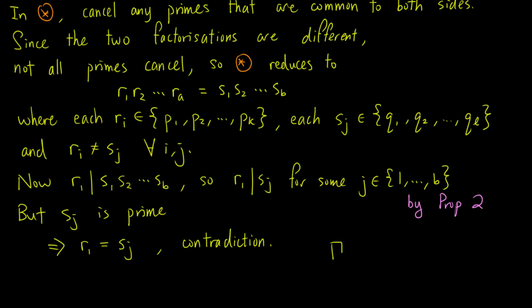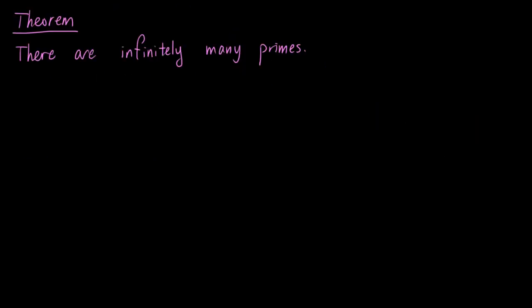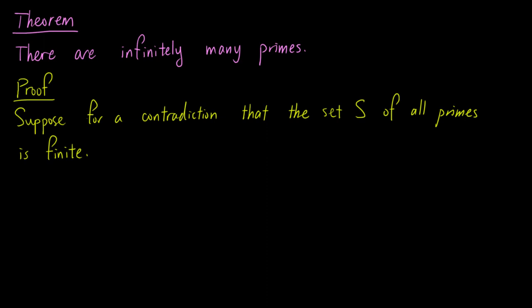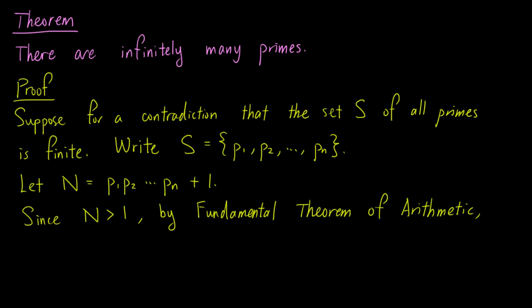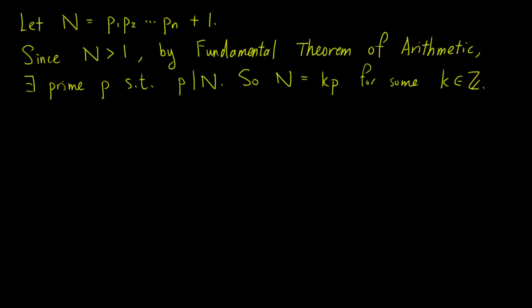This completes the proof. Finally, we prove the result that there are infinitely many primes by applying the fundamental theorem of arithmetic. We proceed by contradiction and assume that the set S of all primes is finite, so we can write S equals {p1, p2, ..., pn}, where n is the finite size of S. Let N equals p1 times p2 up to pn, plus 1. Since N is greater than 1, by the fundamental theorem of arithmetic, there exists a prime p such that p divides N, so N equals k times p for some integer k.